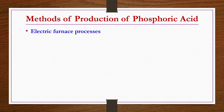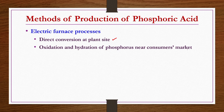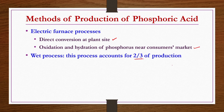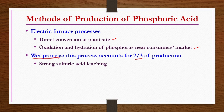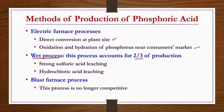Methods of production of phosphoric acid include: first, the electric furnace method — with direct conversion at plant site, and oxidation and hydration of phosphorus near the consumer's market. Second, the wet process, which accounts for two-thirds of phosphoric acid production — done either by strong sulfuric acid leaching or hydrochloric acid leaching. Third, the blast furnace process, which is no longer competitive. Today's lecture will cover the electric furnace methods; the wet process will be discussed in the next lecture.